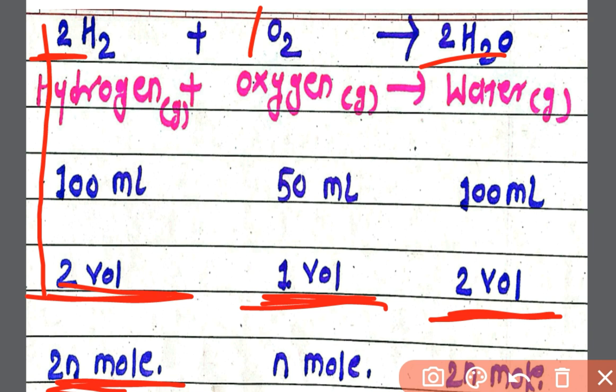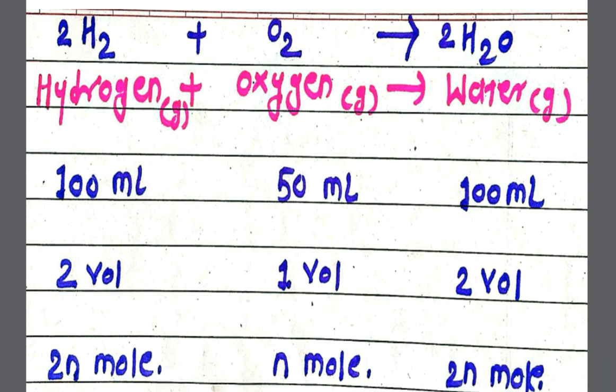So this is the law of Avogadro: equal volumes contain equal number of molecules at the same temperature and pressure.